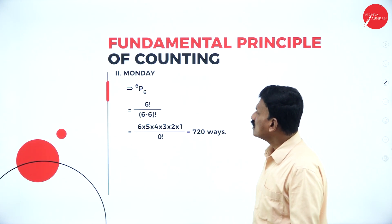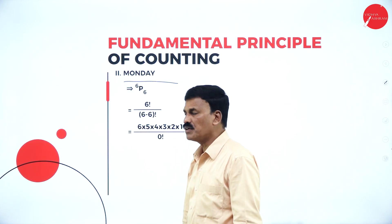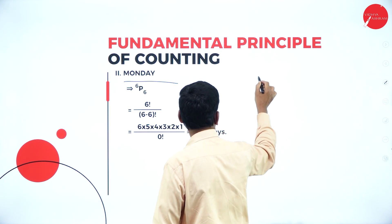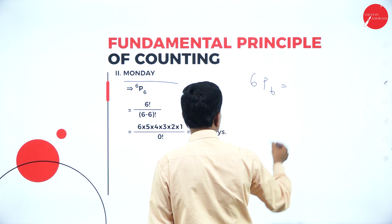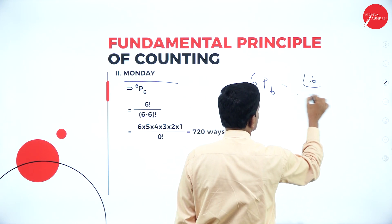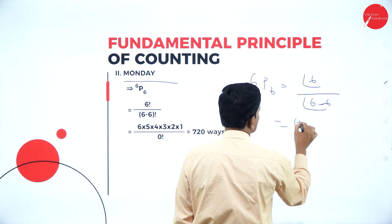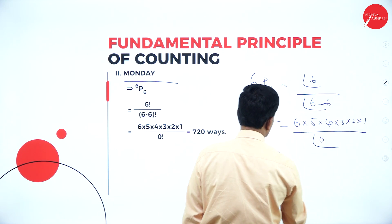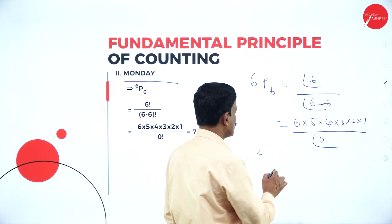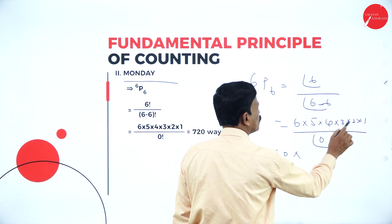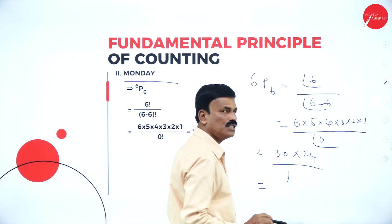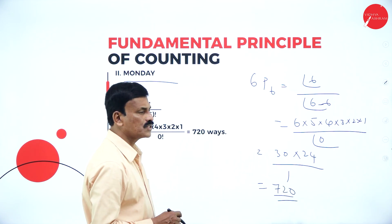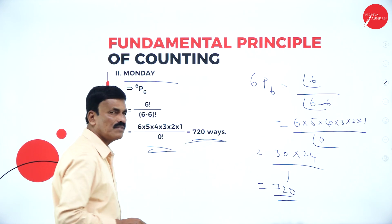In how many ways can the letters of the word MONDAY be arranged? MONDAY contains 6 letters. This can be arranged in 6P6 ways. 6P6 equals 6 factorial divided by 0 factorial, which is 6 into 5 into 4 into 3 into 2 into 1 divided by 1. That equals 720. So we can arrange the letters of the word MONDAY in 720 ways.